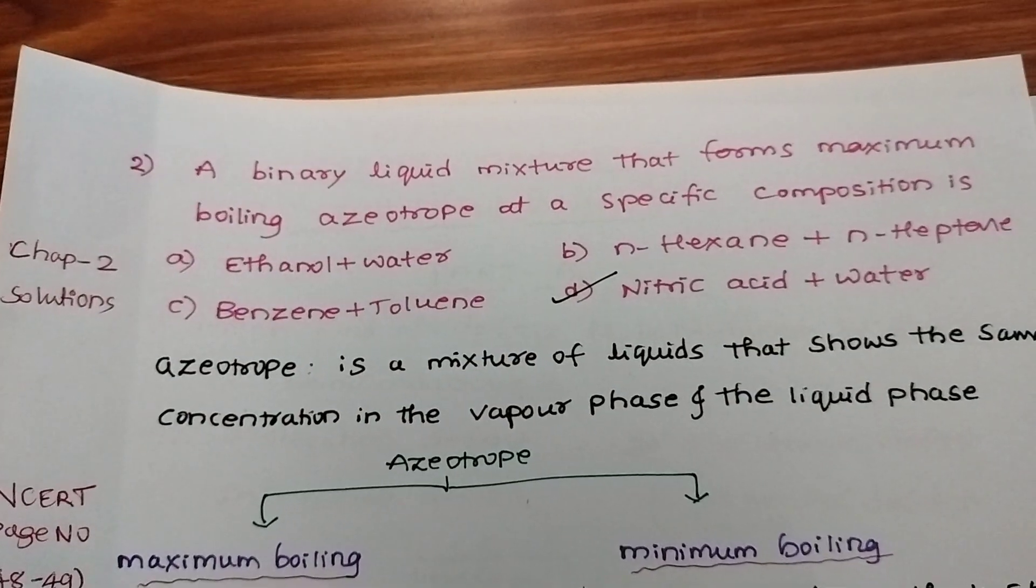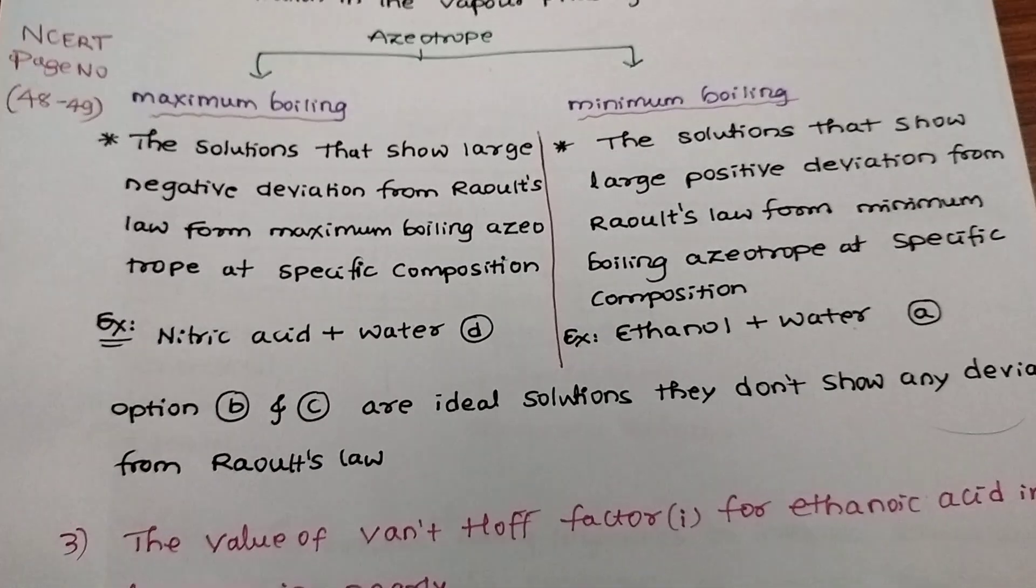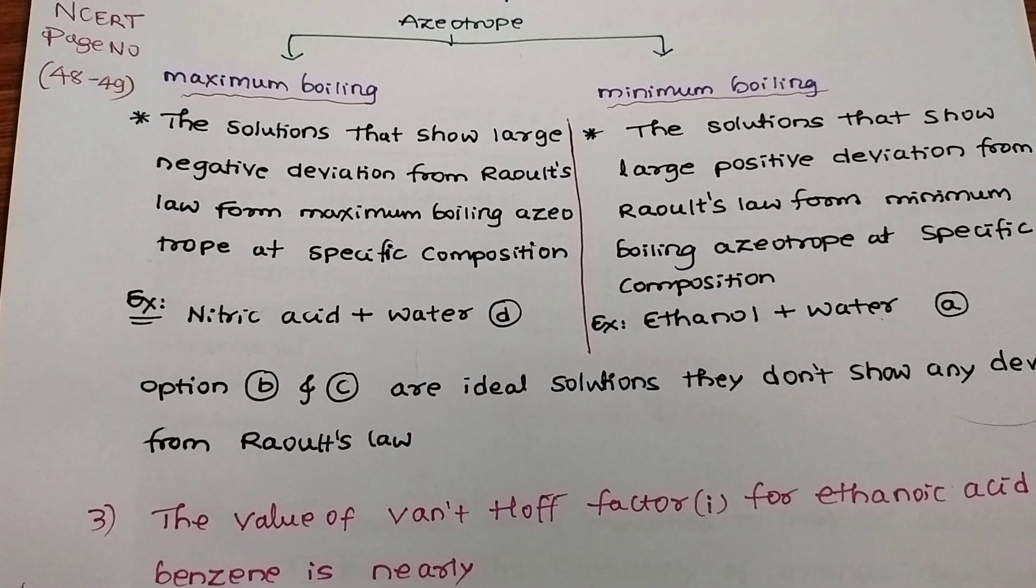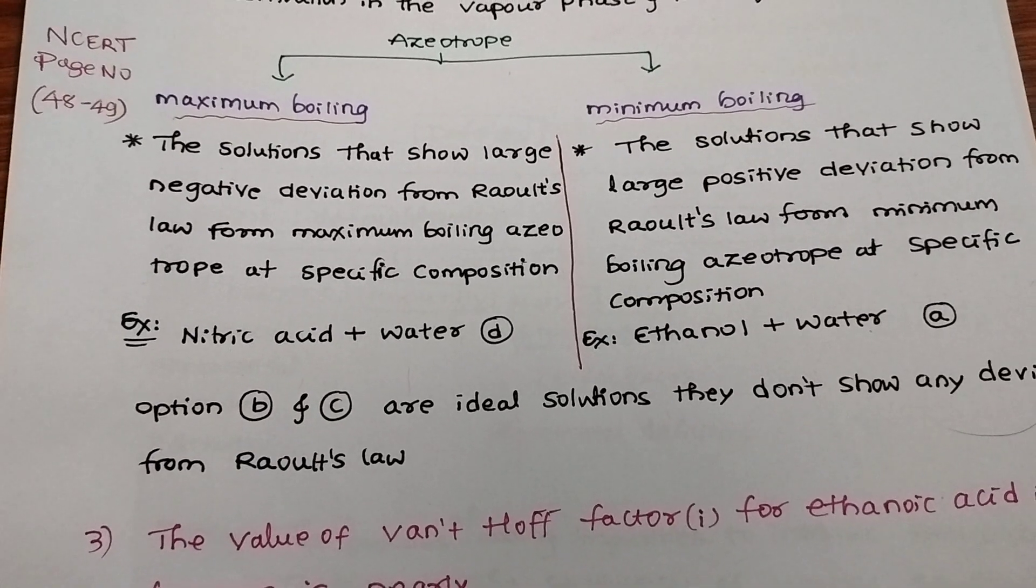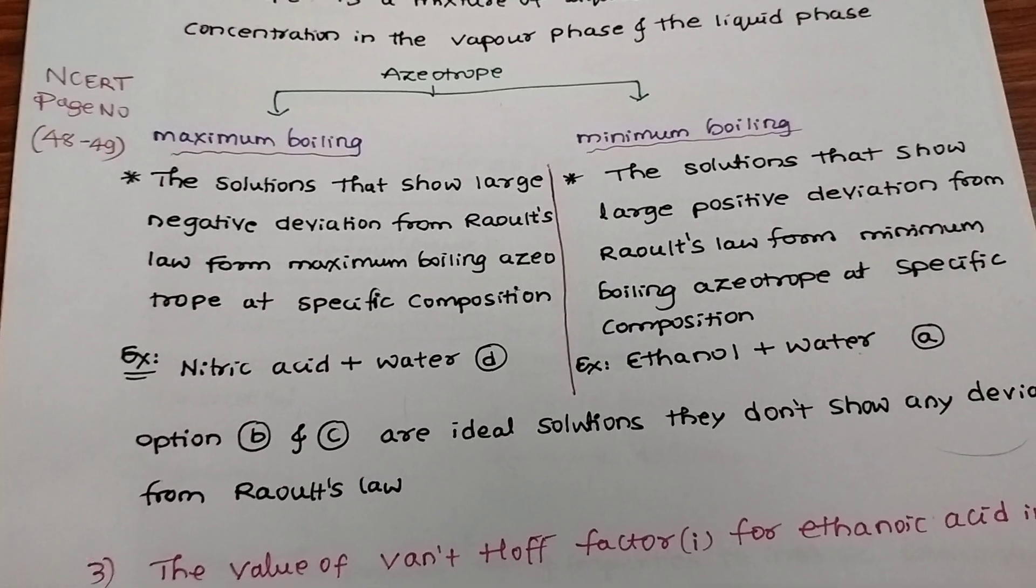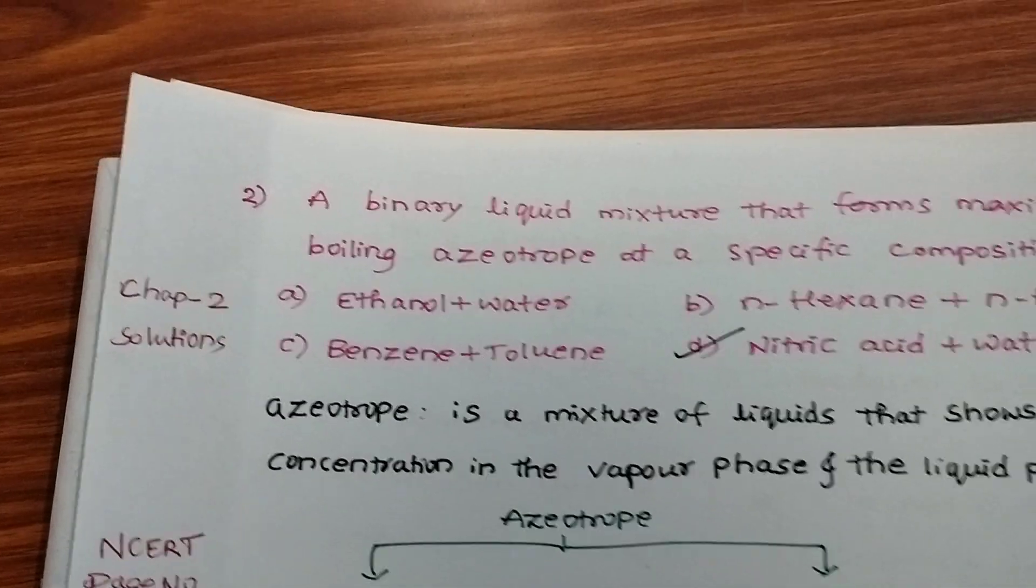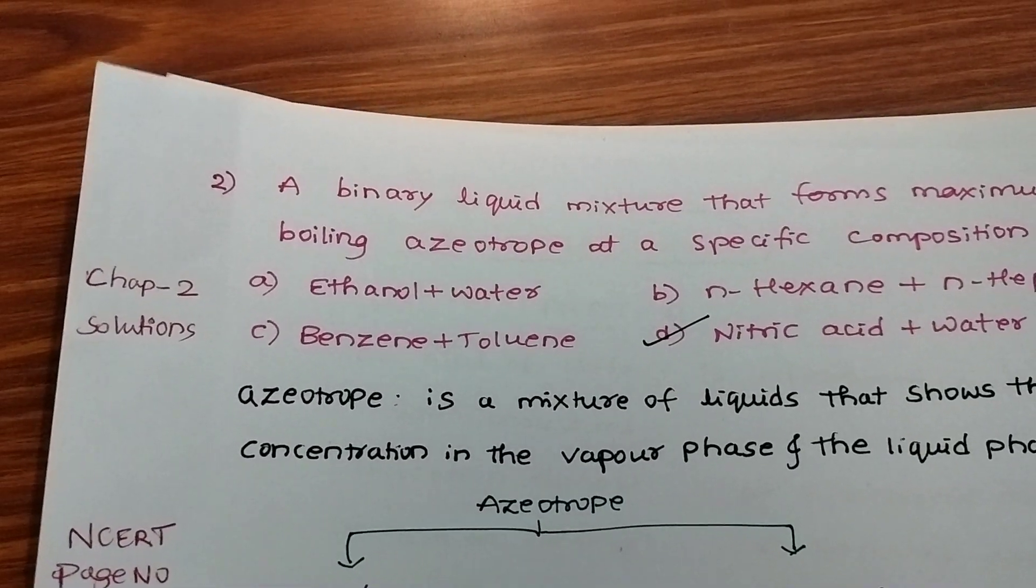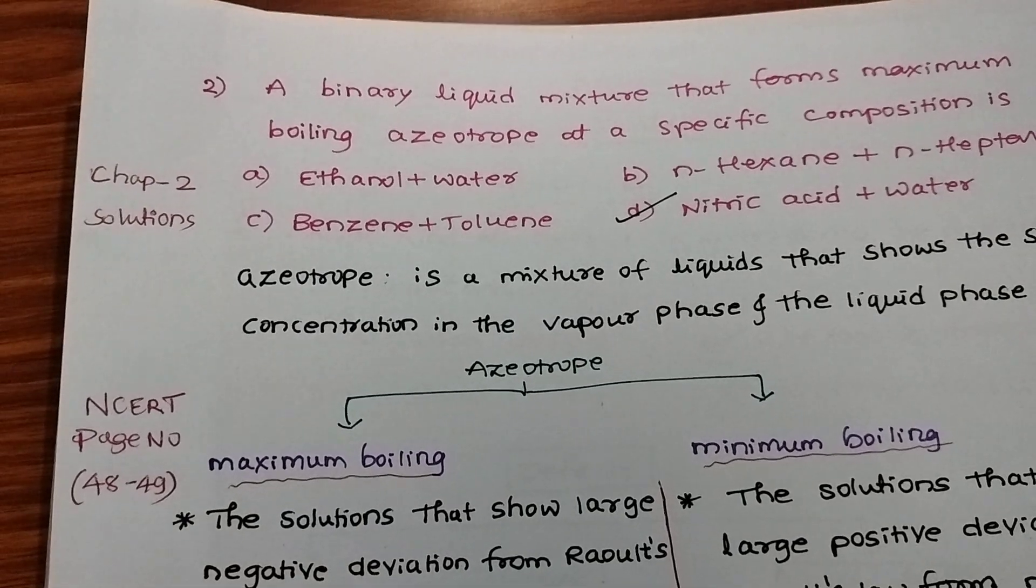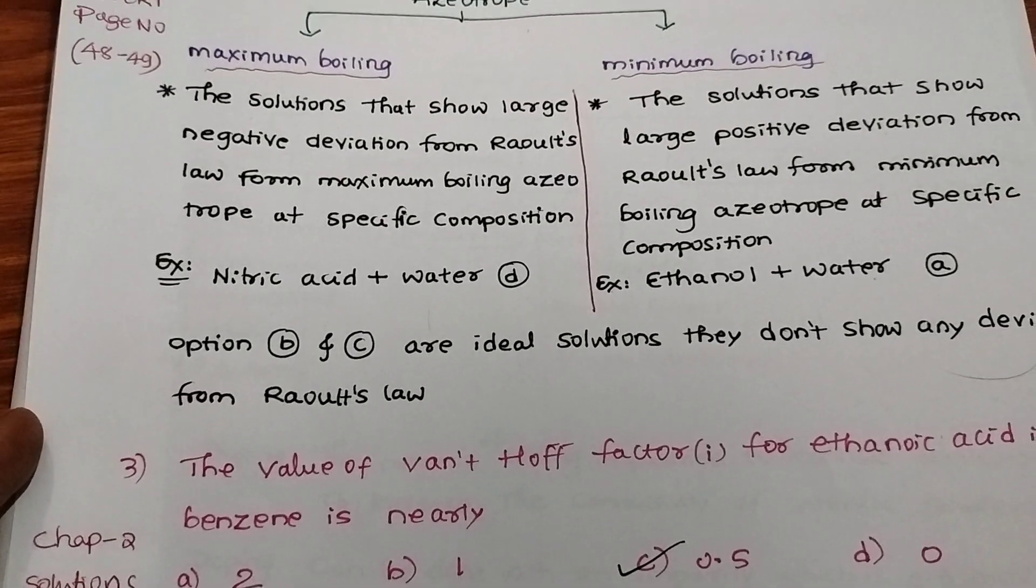Example is ethanol and water. Options B and C are ideal solutions, so they don't have any deviations from Raoult's law. Only solutions with deviations form maximum or minimum boiling. Answer is option D: nitric acid and water.